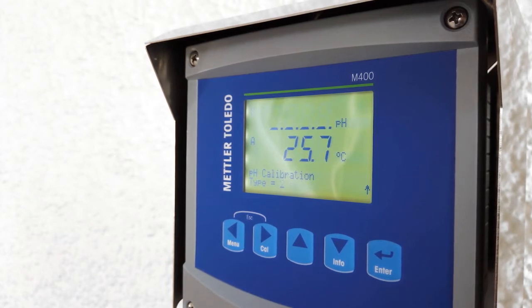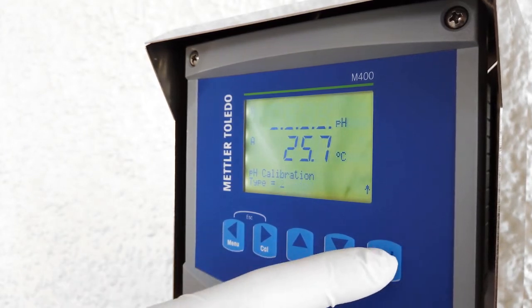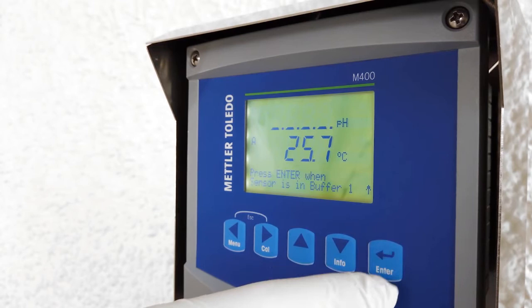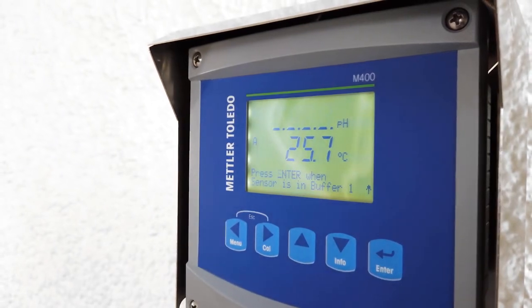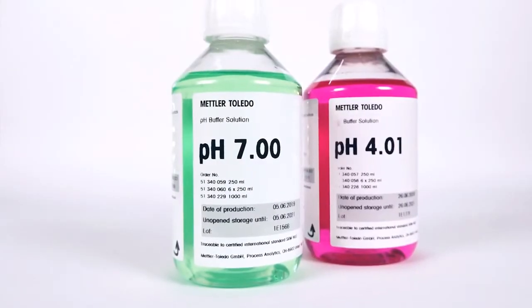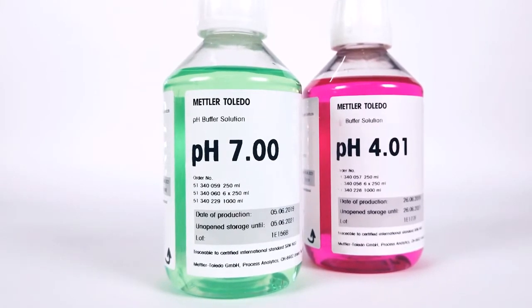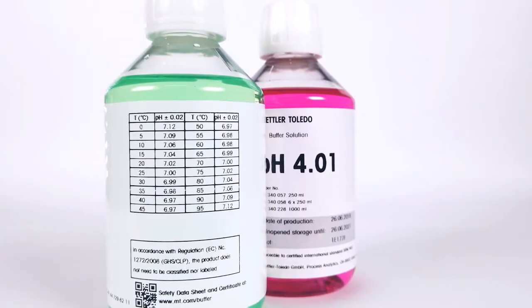Then select two-point calibration and press enter. The transmitter display indicates that the sensor should be put in the first buffer. Mettler Toledo transmitters can automatically detect buffers as they have a Mettler Toledo buffer table preset on them.